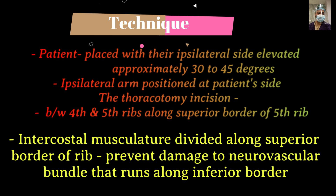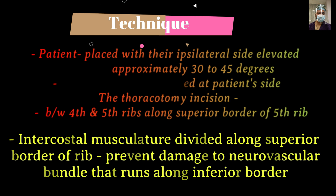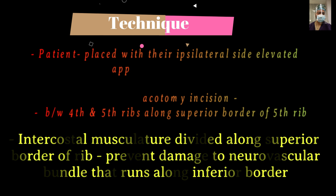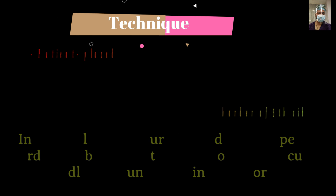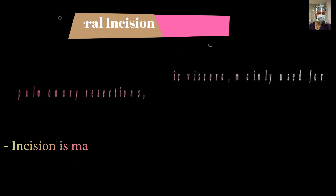We elevate the bridge of the table or place a sandbag beneath the rib cage so the upper rib cage opens up — like a jackknife or kidney position. Usually the space between the fourth and fifth rib is the entry point, though this can be modified. The intercostal musculature is divided along the superior border of the rib to prevent damage to the neurovascular bundle running along the inferior border.